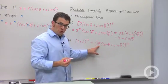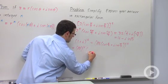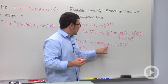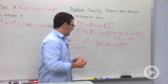So this is going to be root 2 to the 16th power. And then cosine, the argument is going to be multiplied by 16. Pi over 4 times 16 is 4 pi.